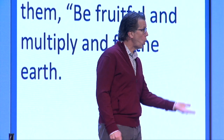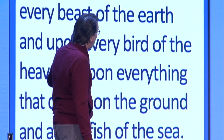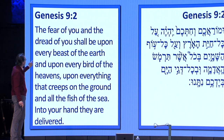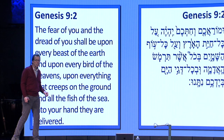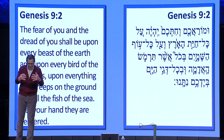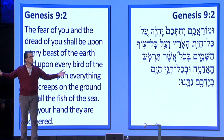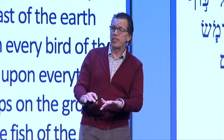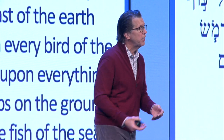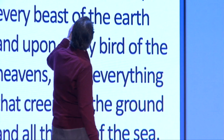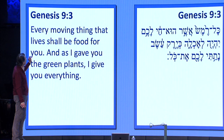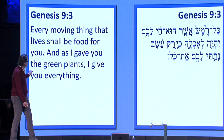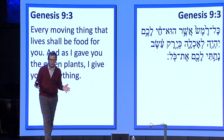Again, what they had been told to do in creation, they're told again. 'The fear of you and the dread of you shall be upon every beast of the earth, upon every bird of the heavens, upon everything that creeps on the ground, and all the fish of the sea — into your hand they are delivered.' When God created Adam and Eve, he set them in dominion over the animals. Now with this restored world, he's done that again with Noah and his sons and their wives. 'Every moving thing that lives will be food for you; as I gave you the green plants, now I give you everything.'